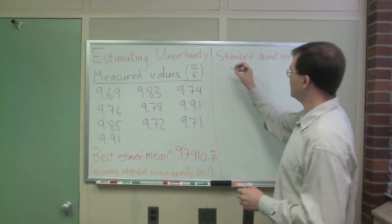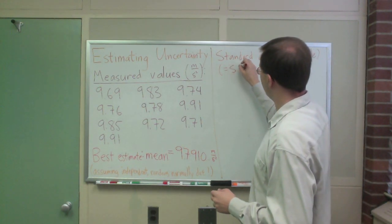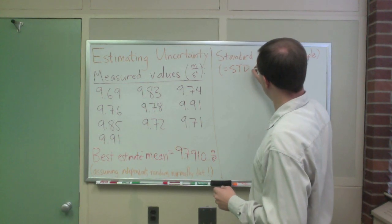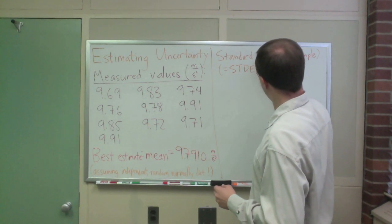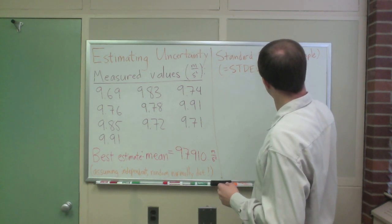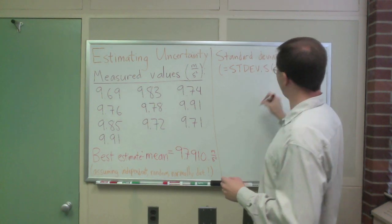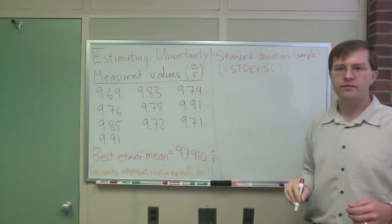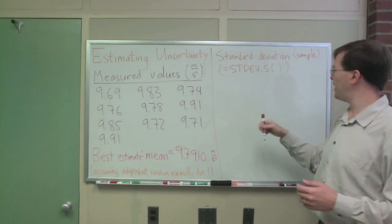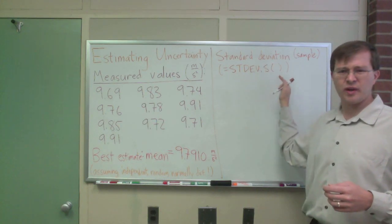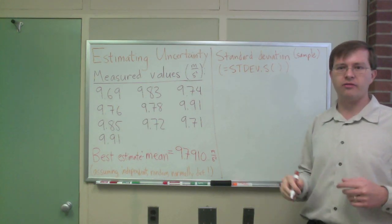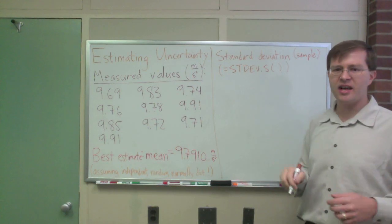If you're using Excel, you would use the Excel function stdev.s is the function you would use, s for sample, not stdev.p. If you leave out the dot s, it does the right thing, but this is the new notation to make sure you have the right function. So, okay, standard deviation.